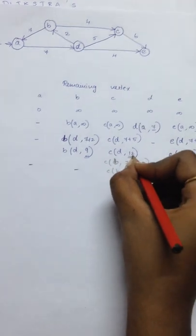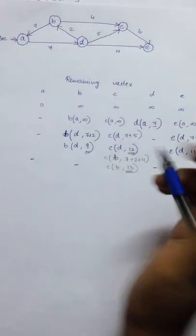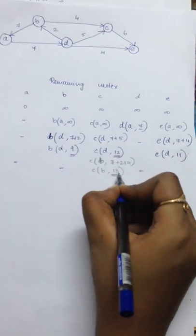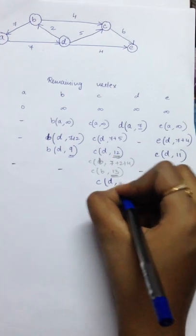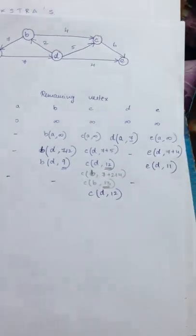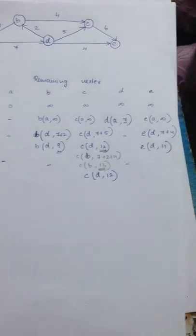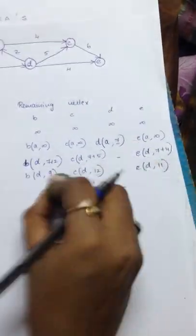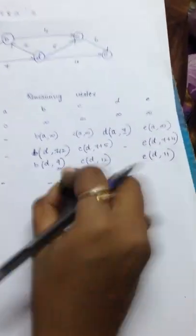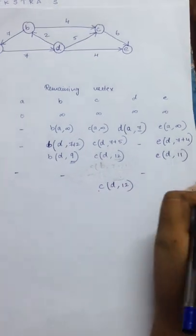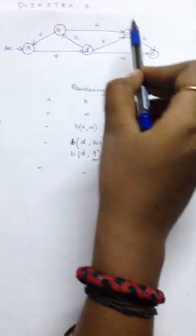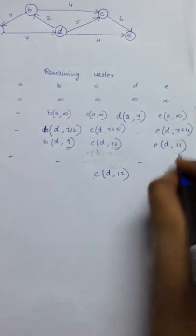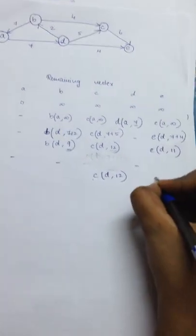We have to find the minimum path. So here you don't take this C, B comma 13. You go with the previous lesser value C of D comma 12. This B of 13 cannot take place. You go with C of D comma 12. And to reach E through A, B, D. Since C node has not been accessed so far, you cannot reach E. So the same value comes down.